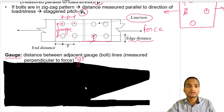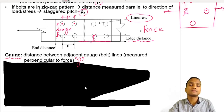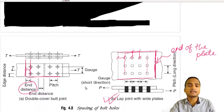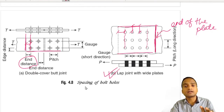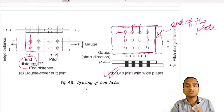So end distance and edge distance are straightforward. The notation we use will follow IS 800. After understanding these four parameters — pitch, gauge, end distance, and edge distance — it becomes easy to do the calculation part. The bolting pattern will be provided, and you will be asked to calculate the strength of the joint.